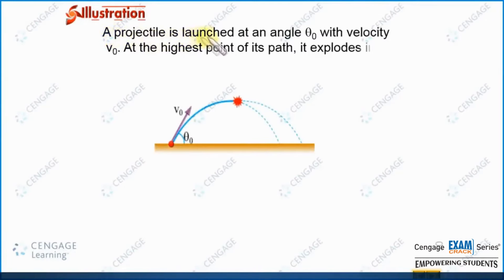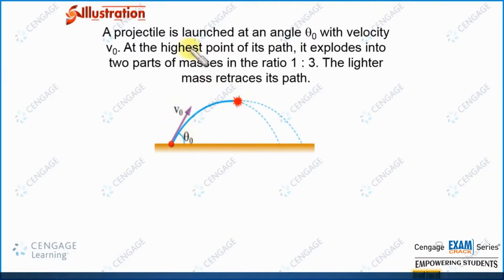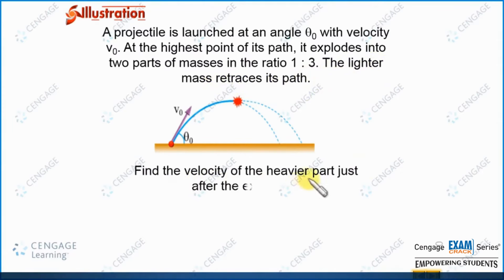In this illustration, a projectile is launched at angle theta naught with initial velocity v naught. At the highest point of its path, it explodes into two parts with masses in the ratio 1 is to 3. The lighter part retraces its path. Find the velocity of the heavier part just after the explosion.